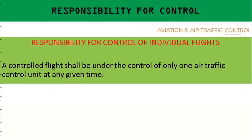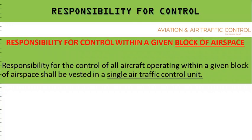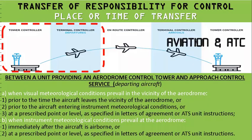There will not be two controllers handling a particular single controlled flight. Responsibility for control within a given block of airspace lies with only a single air traffic control unit, though a single control unit may be handling 25, 30, or 35 air movements at any particular time.